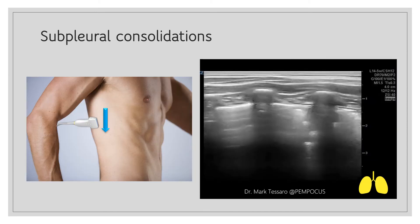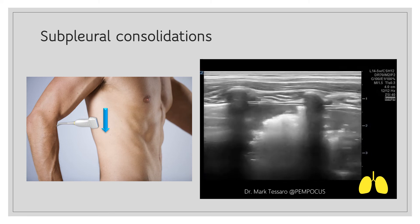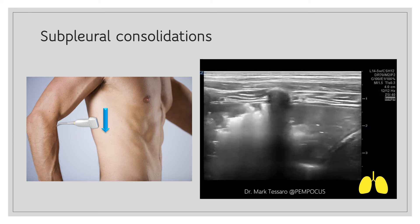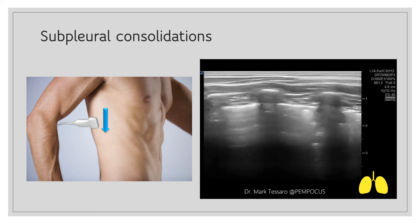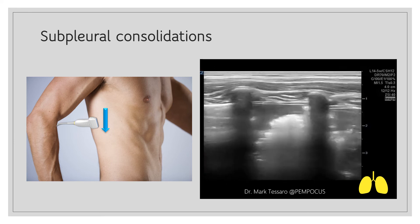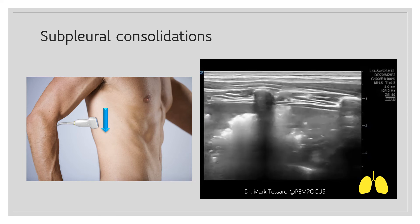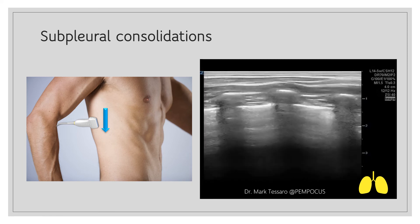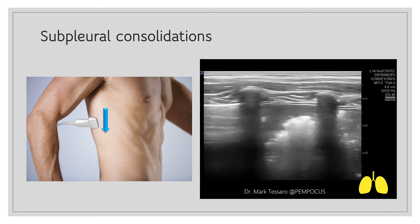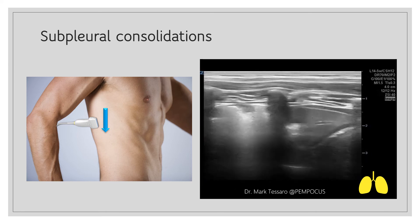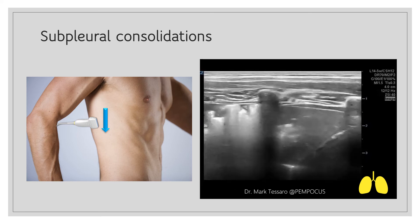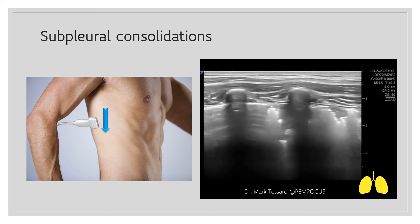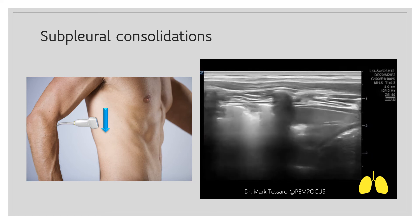Here is an example of subpleural consolidations in a patient with viral pneumonia. As we slide down the transducer, note that there are small consolidated areas appearing just below the pleural line, separated from the surrounding healthy lung by a shredded margin — that's called the shred sign. The image was obtained using a linear transducer because it offers better resolution when imaging superficial structures.